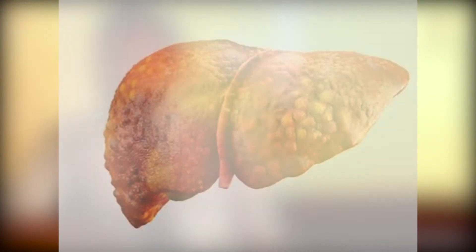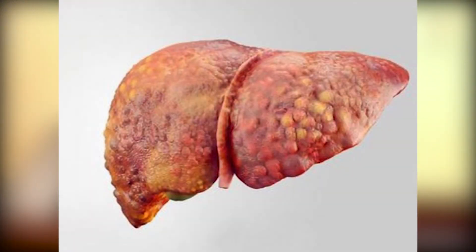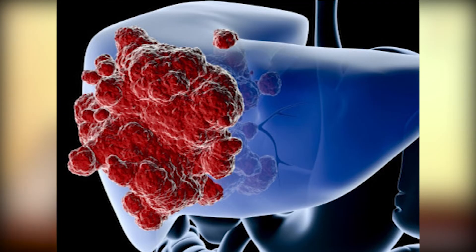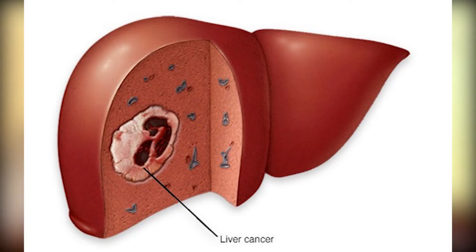Secondary liver cancers occur when the primary tumor is at a different site. For example, the primary can be from the colon, small intestine, or rectum and it can deposit in the liver. Other common primary sites that lead to liver secondaries include the kidneys, lungs, and ovaries.